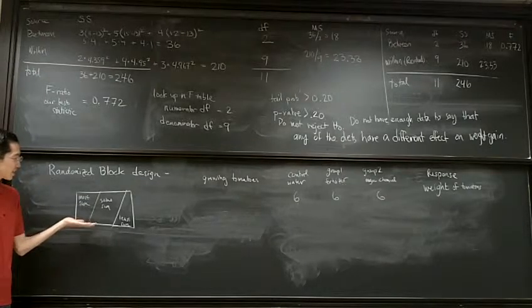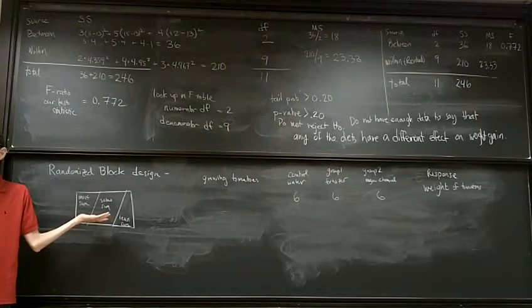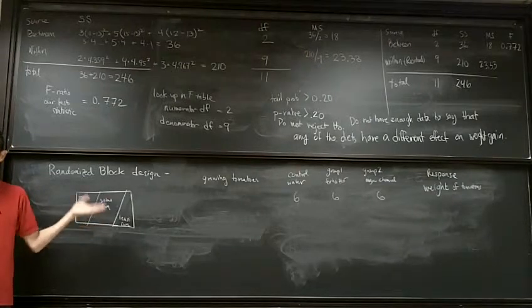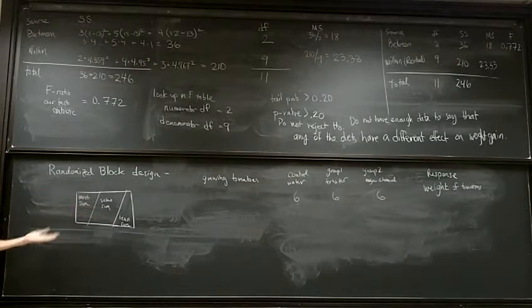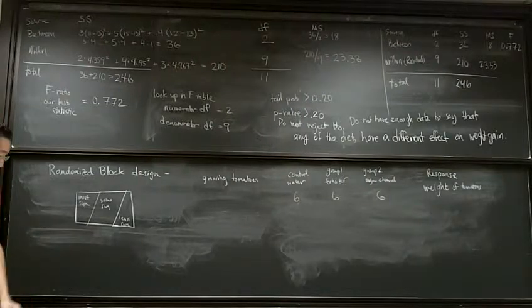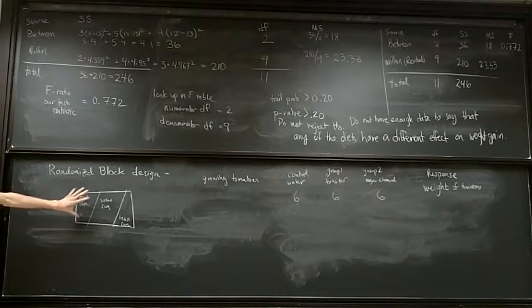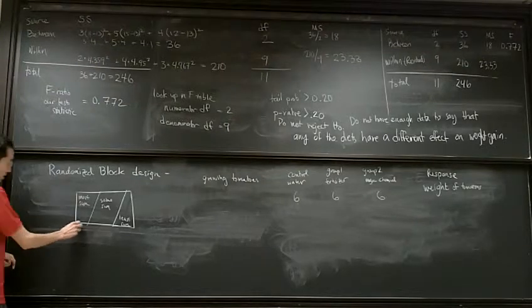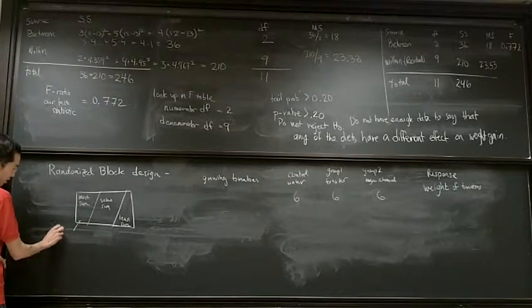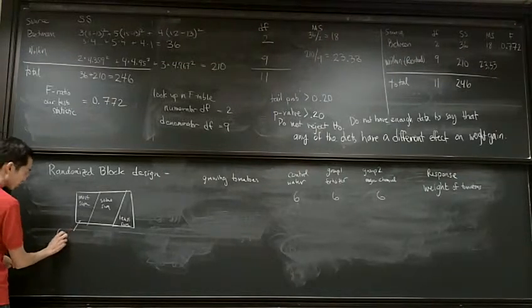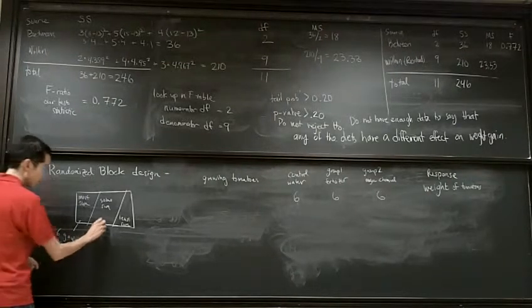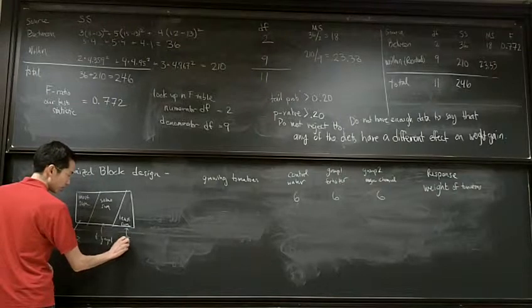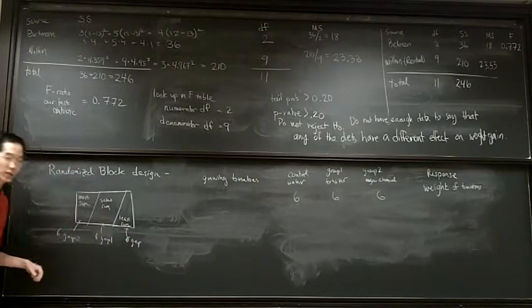We already know that sunlight plays a role in the growth of tomatoes, okay. And so, we're not interested in knowing does having more sun help the tomatoes or not. We already know that you want to give your tomatoes some sun, okay. So, when you put your tomato plants in here, there's, what you do not want to do, okay, is you do not want all six, let's say all six of group two to be over here. All six of group one to be here, and all six of the control group to be over here, okay.